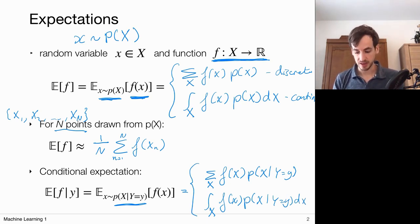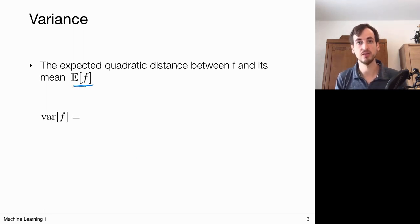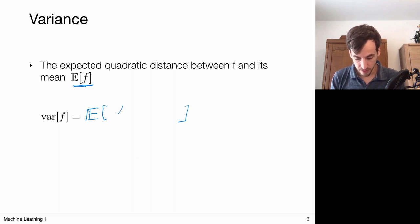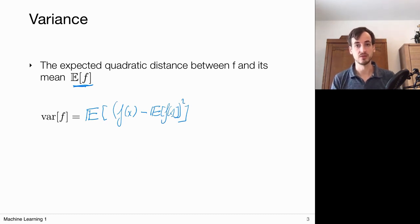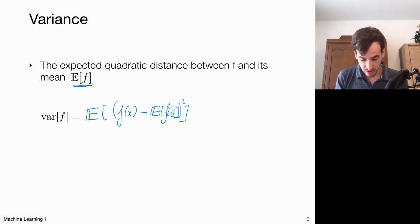The expected value can be interpreted as a weighted mean where the weight is according to the probability of particular symbols being observed. Now let's define the variance. The variance is defined as the expected quadratic distance between f and its mean. We're computing the expected value of the squared distance of f(x) to its mean E[f]. Let's write this out and show that this variance actually splits into two separate terms that will often be more convenient to work with.